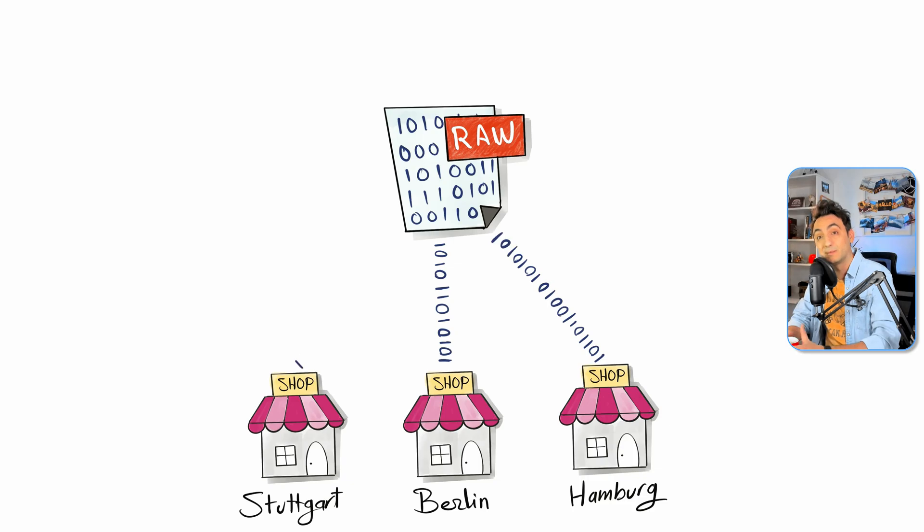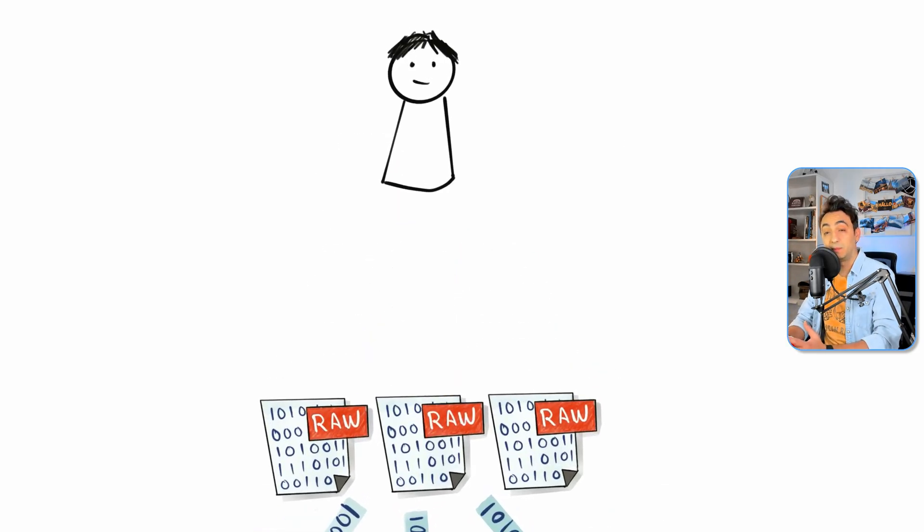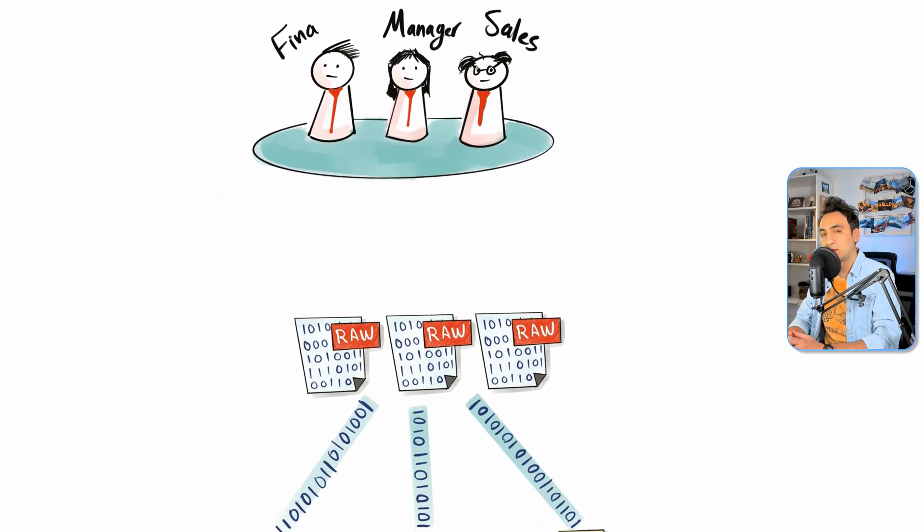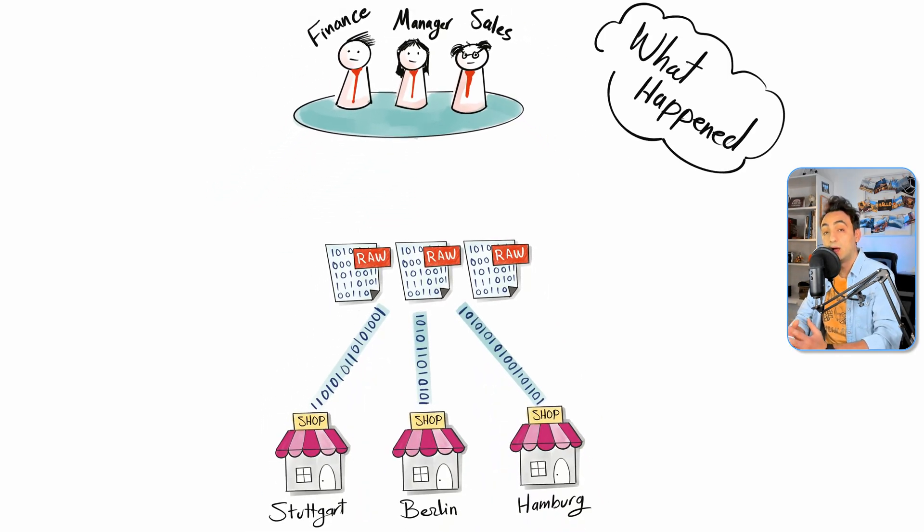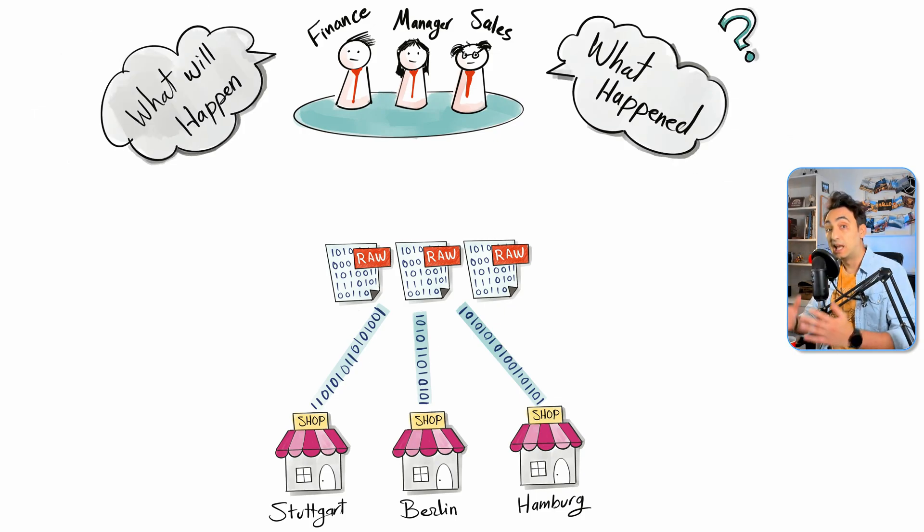We have a group of people that are the decision makers, like managers, HR, and finance. They have many questions and decisions to make. They might have questions about what happened and other questions about what will happen. Now, if the managers try to find the answers from the raw data, they might find nothing.